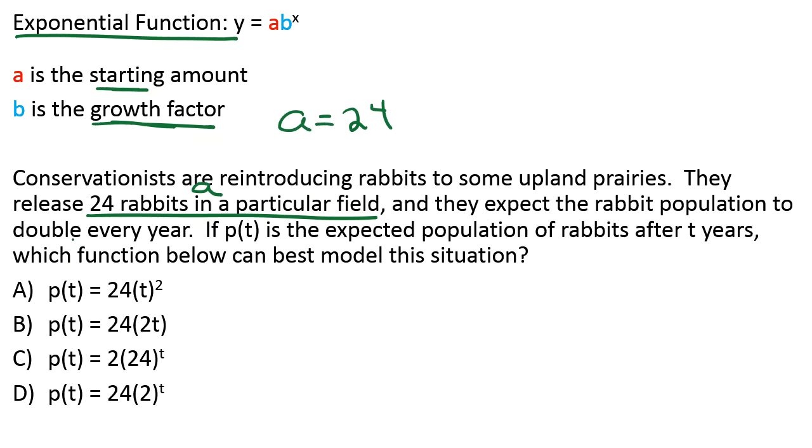And they expect the rabbit population to double every year. The word growth factor means how much it's growing by, and doubling is a form of growth. It's doubling every single year. What number would represent double? B is a growth factor, doubling, so that means B is equal to 2, because doubling means 2 times the amount every year.